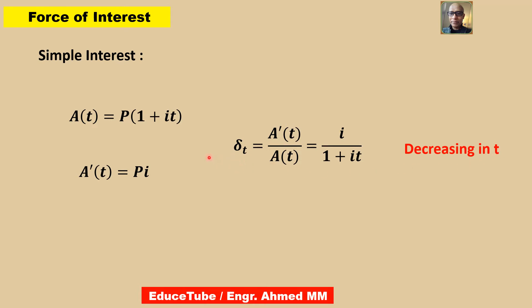In the case of simple interest, we note that delta t decreases as t increases. Let's move to the next slide to look at compound interest.